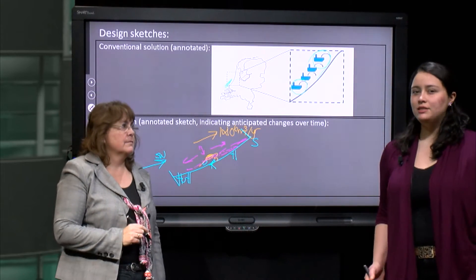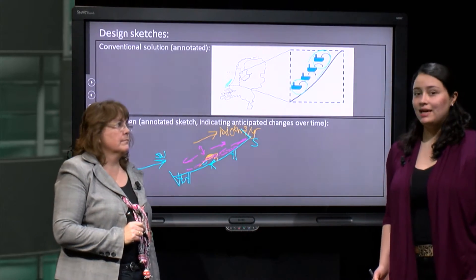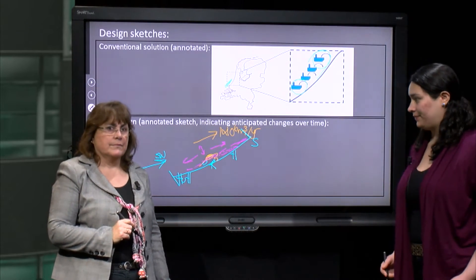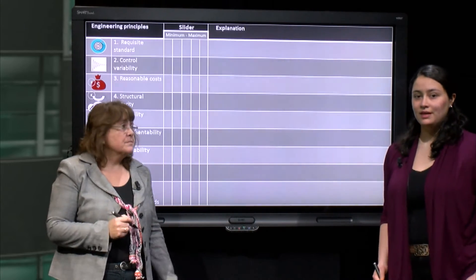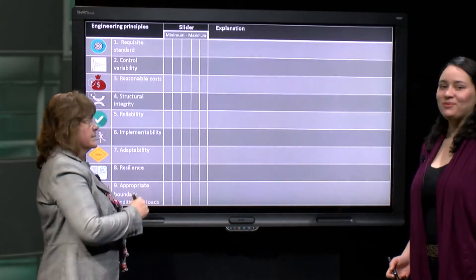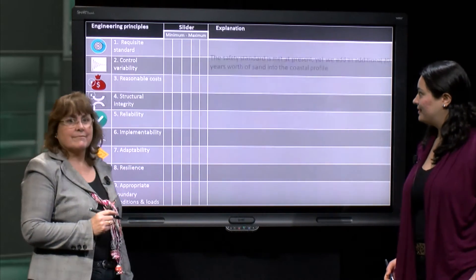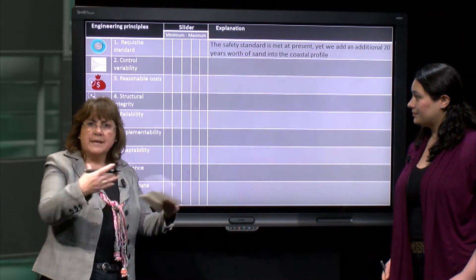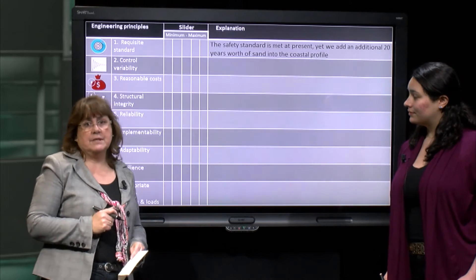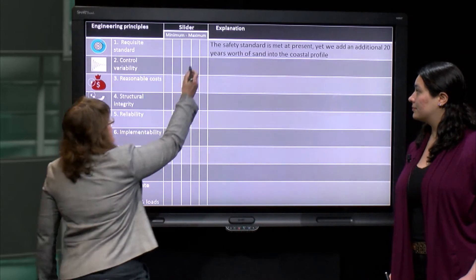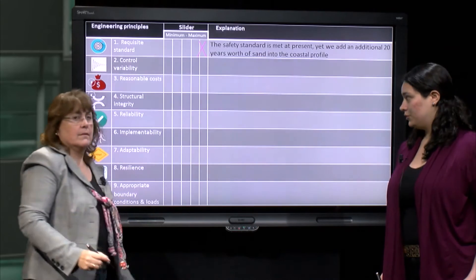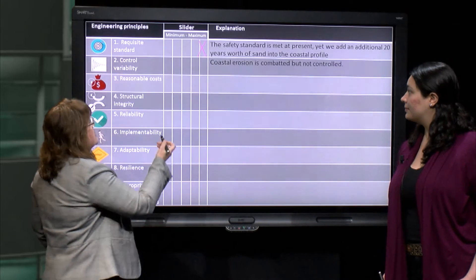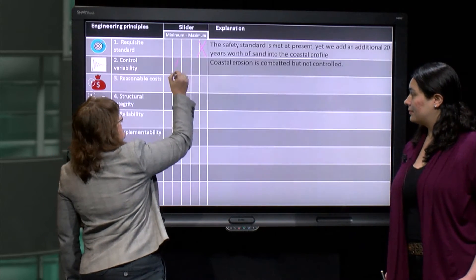Let's move on to step 4 and see how the design principles of building with nature are incorporated in this design. Starting with principle 1, requisite standard: we already meet the flood protection standard, but by nourishing the coast with 20 years' worth of sand we add additional safety, so we score this principle at a maximum. What about principle 2, control variability? Coastal erosion is combated but not controlled, so actually we score this quite low.